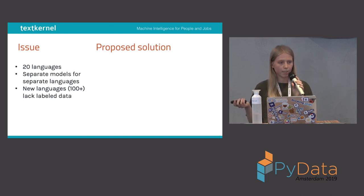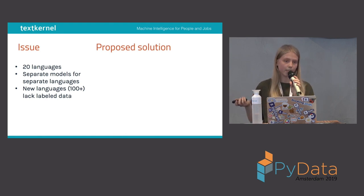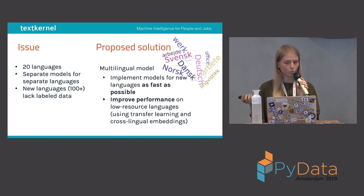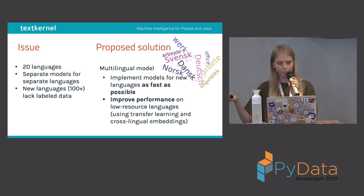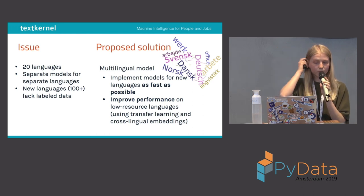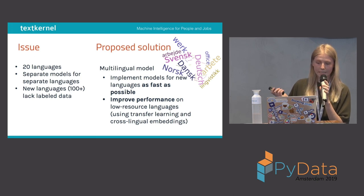At TextKernel we now support 20 languages and want to support more, but we don't have labeled data for those languages and it takes time to get it. What we want instead is a multilingual model that will allow us to parse several languages at the same time. We hope this will help us implement models for new languages as fast as possible and also improve performance on low-resource languages using transfer learning and cross-lingual embeddings.